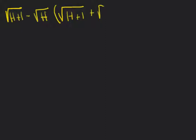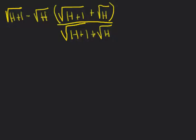There's a very common way for a mathematician to get rid of subtraction, especially when radicals are involved — multiply by the conjugate. So if I multiply the top by square root of h plus 1 plus square root of h, I need to multiply by the same expression over itself, which equals 1, so I haven't changed anything.